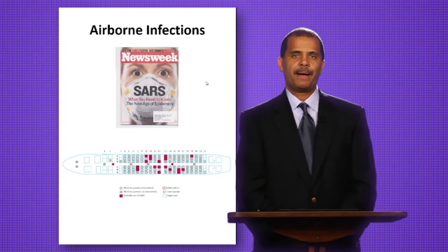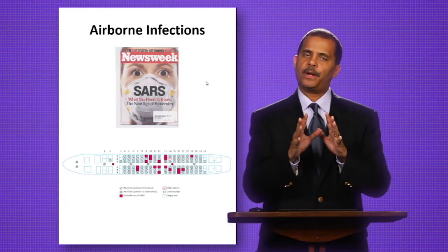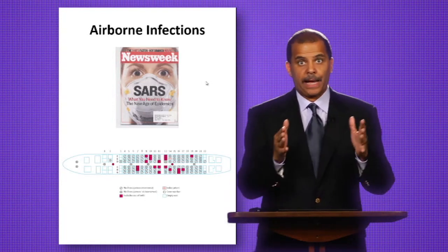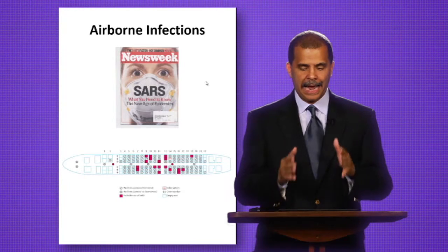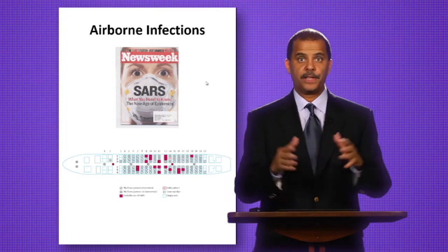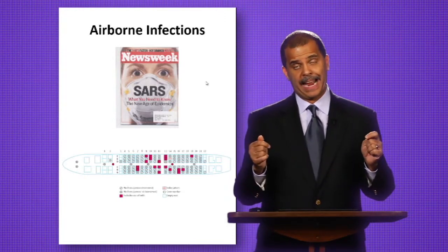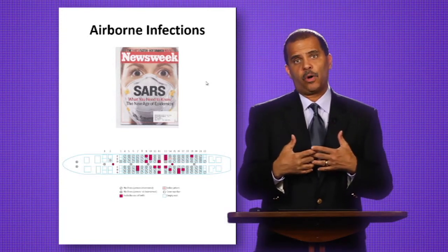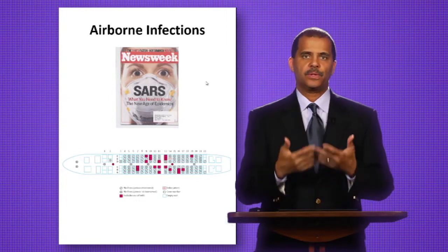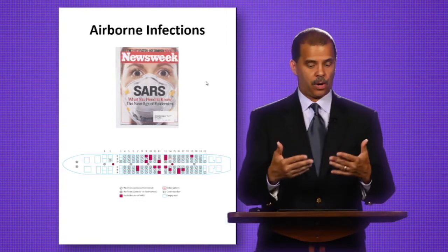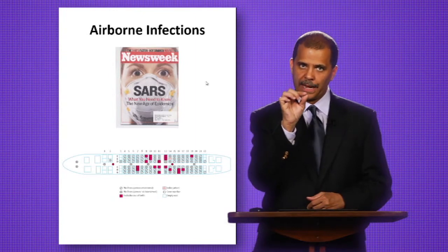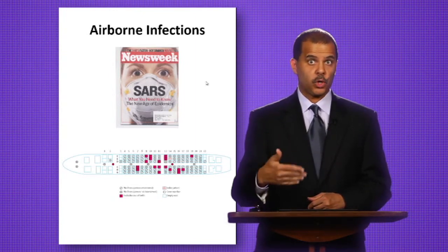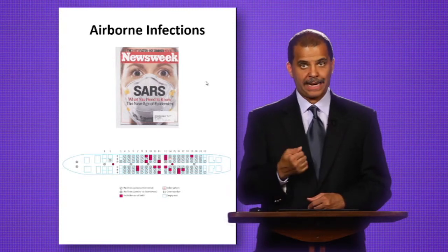So let's talk a little bit about airborne infections. You'll remember a number of years ago about the SARS outbreak. People were very concerned about whether to get on an airplane. I have a diagram showing you a replica of the actual airplane. The individual with the X mark — that's what epidemiologists call the index case, the individual with the SARS. And all those little red boxes are individuals that later showed symptoms of SARS — they contracted SARS.